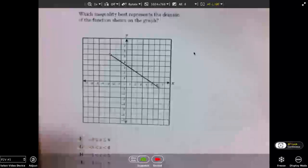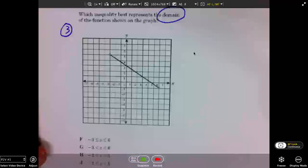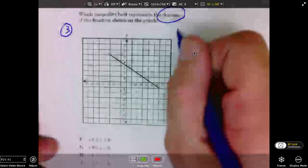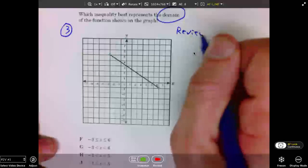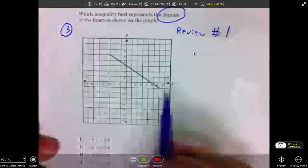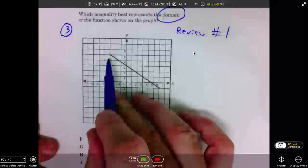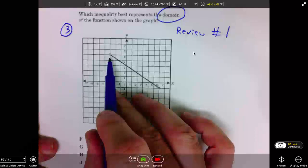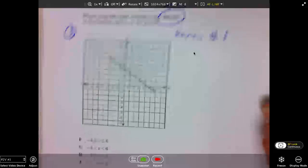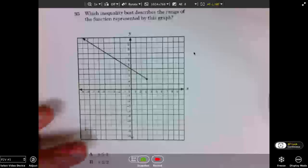All right, number 3 deals with domain again. I want you to review question number 1. This will be very similar to question 1. Review number 1. Notice that the end points are the open circles, just like number 1.